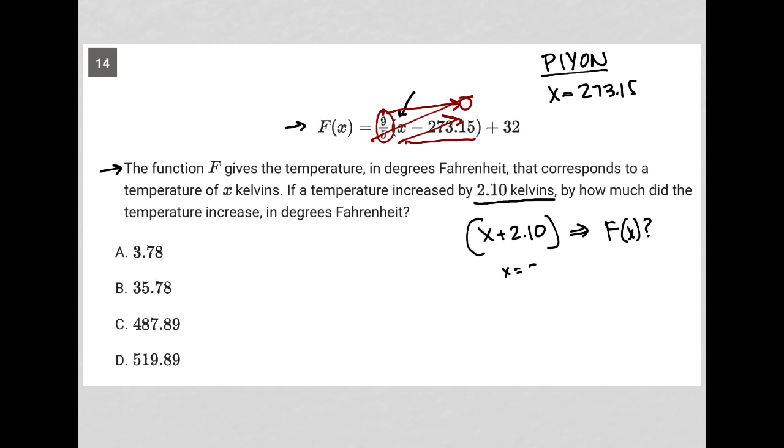When x is equal to 273.15, f of x is equal to 32. All we have left is this 32 here.